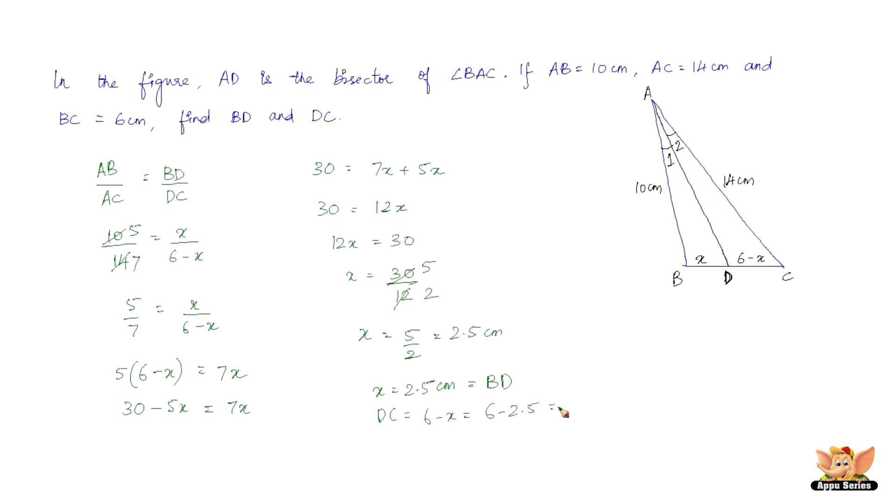That is nothing but BD and DC is going to be 6 minus X, which is 6 minus 2.5. So this is going to be 3.5 centimeters. So DC is 3.5 centimeters and BD is 2.5 centimeters.